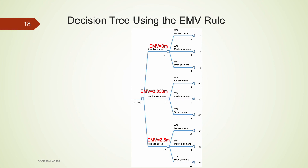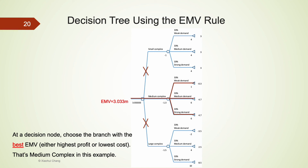Moving down to the middle and bottom chance nodes, using the same calculation, the EMV at the medium-complex chance node is $3.033 million, and the EMV at the large-complex chance node is $2.5 million. After calculating all the EMVs at the chance nodes, we move one step to the left to a decision node — a square — where we choose the branch with the highest EMV. Comparing the three EMVs, the medium-complex branch has the highest EMV. Therefore, we would go with building a medium complex and expect the highest expected payoff. In summary, the decision-maker will choose the alternative that leads to the highest EMV, which in this example is building a medium complex.